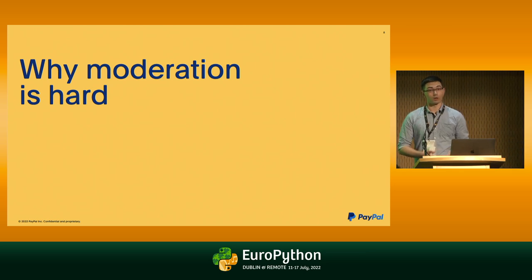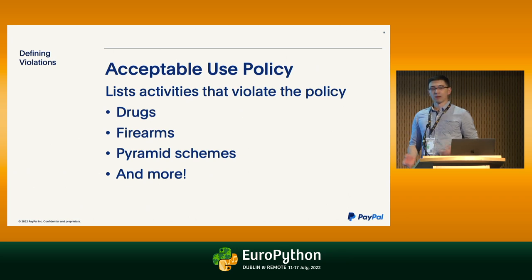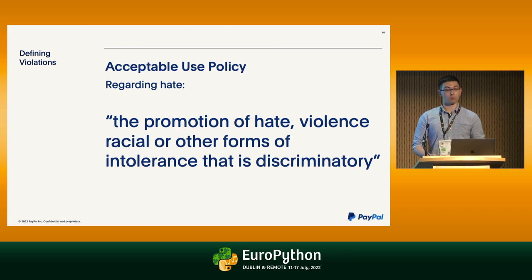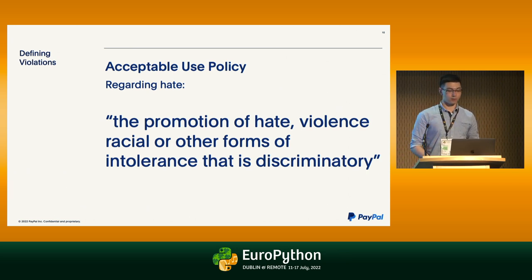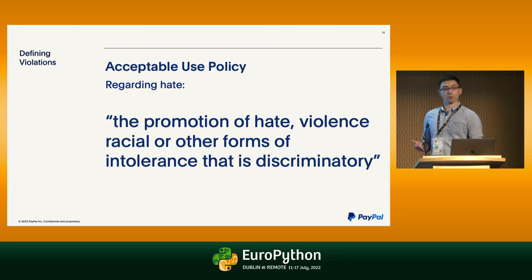Next up: why moderation can be hard — and this does not just refer to automated moderation, it can be hard for humans as well. The first question is what types of content should be flagged. We have an acceptable use policy that goes over the different types of activities that aren't allowed on the platform — drugs, firearms, pyramid schemes, and so on. Looking at hate specifically, the policy says you're not allowed to use our platform for the promotion of hate, violence, racial, or other forms of intolerance that is discriminatory. That's not very specific, so the question is how can we take this vague half-sentence and turn it into actual moderation decisions?